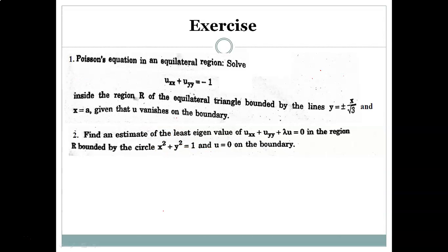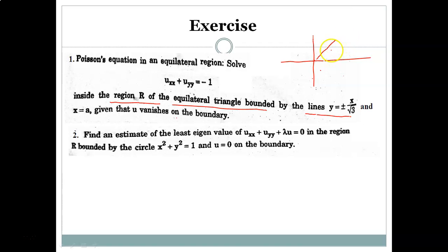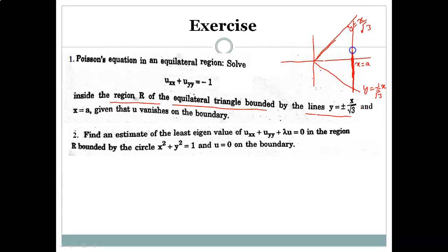Based on this discussion, we now have exercises. The first exercise is a Poisson equation again, but the region is changed. You have to solve the Poisson equation in the region R of an equilateral triangle bounded by the lines y = ±x/√3 (slopes ±1/√3) and x = a. So the bounding lines are y = x/√3, y = −x/√3, and x = a.